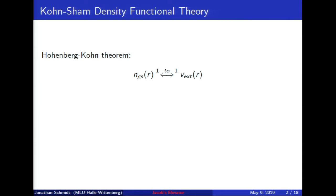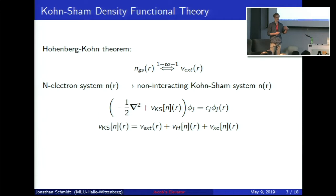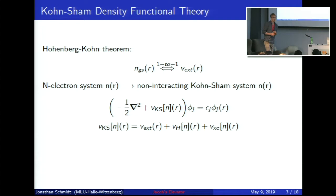I'll start with a short introduction into Kohn-Sham density functional theory so everybody's on the same page. We have the Hohenberg-Kohn theorems with the one-to-one correspondence between the ground state density and the external potential in a non-degenerate system, and if we minimize the energy in terms of the density we arrive at this ground state density. Since we don't know how to do this directly for an electron system, we use an auxiliary non-interacting Kohn-Sham system, solve the corresponding Kohn-Sham equations, and the Kohn-Sham potential must be chosen such that it reproduces the ground state density at the end of the self-consistent cycle.